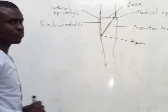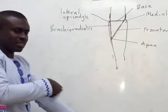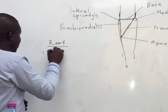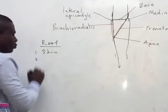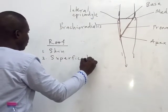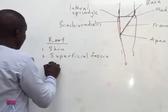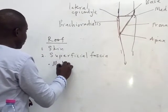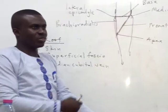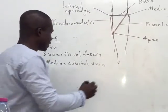Now let's look at the roof. What forms the roof of the cubital fossa? The first layer is the skin, which will be covering this area. So the roof of the cubital fossa is formed by: one, skin; two, if you take away the skin, you get what we call the superficial fascia. Within the superficial fascia, it contains what we call the median cubital vein, which is a site for intravenous injections as well as venipuncture — drawing of blood for analysis.